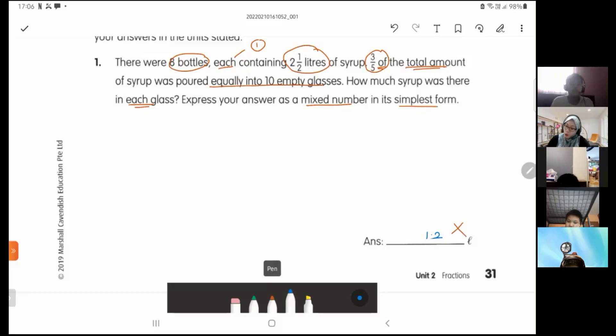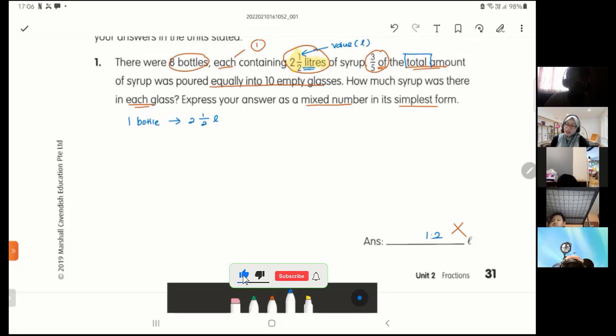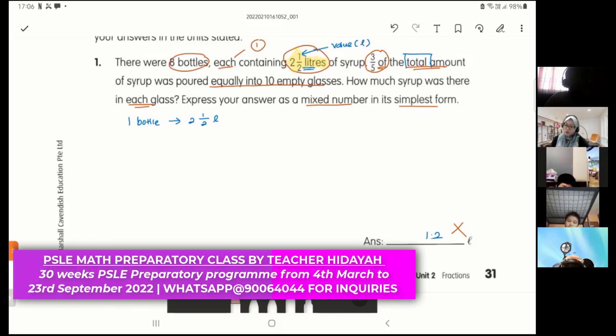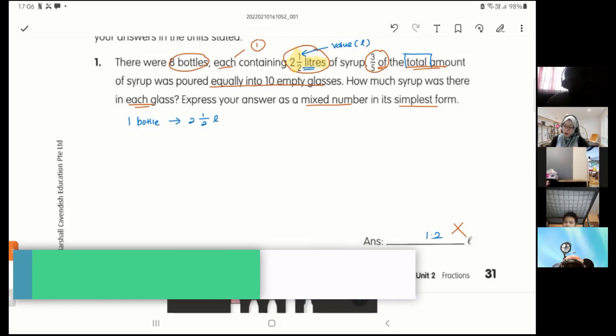I want to find the total amount first, total amount of syrup. I have eight bottles, each one bottle is two and a half liters. When you see a fraction with the unit at the back, the liters is the units, the measurement. When it is tagged together with a unit of measurement, this is now a value. It is the capacity of the syrup in the bottle.